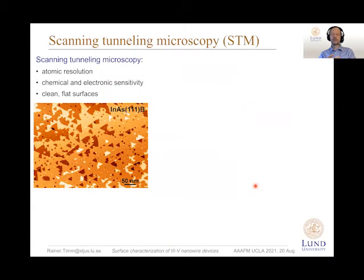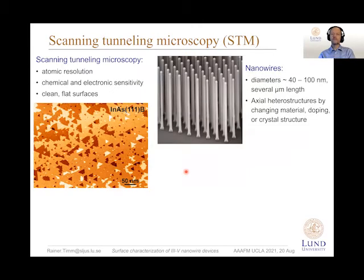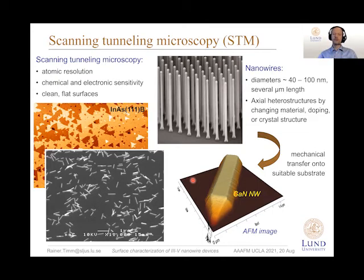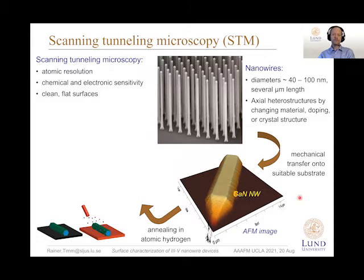This is usually done with scanning tunneling microscopy, but typically STM is used on nice flat two-dimensional surfaces, and here we have more or less the opposite — these high aspect ratio nanowires. So we need to break these nanowires off the growth substrate, deposit them onto another suitable substrate, then take our STM tip and climb on top of this nanowire until we reach the surface facet and scan along it. We also need to remove the native oxide, which we do by annealing our III-V material in atomic hydrogen.